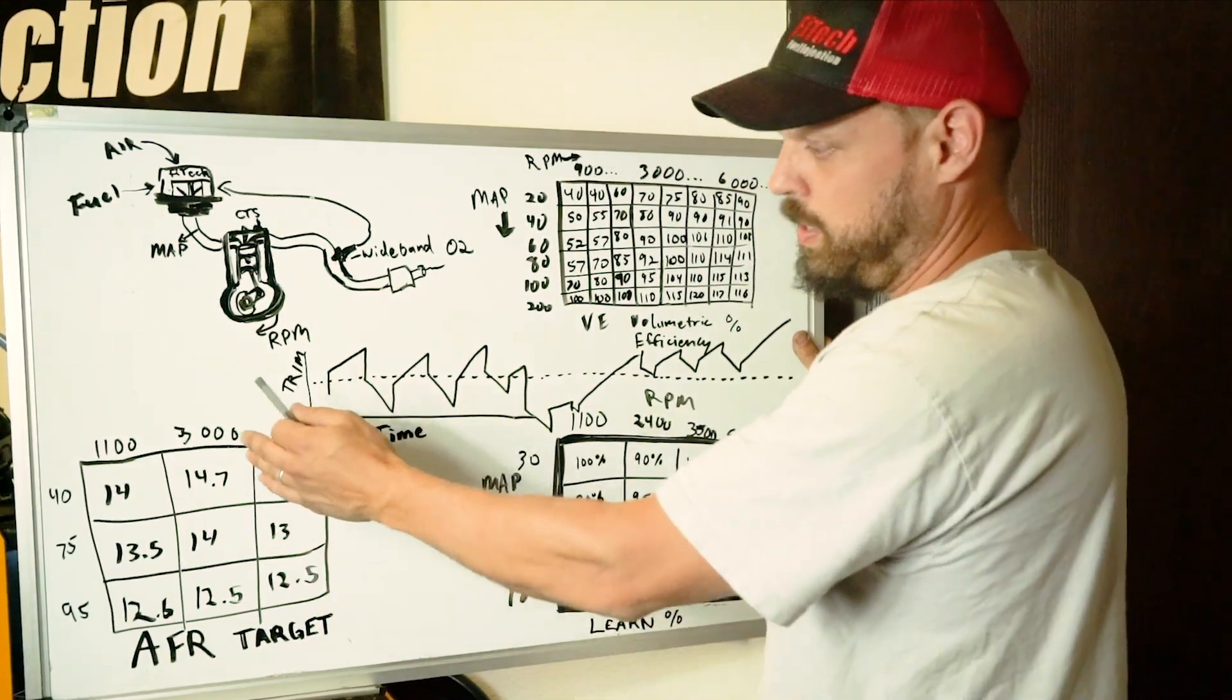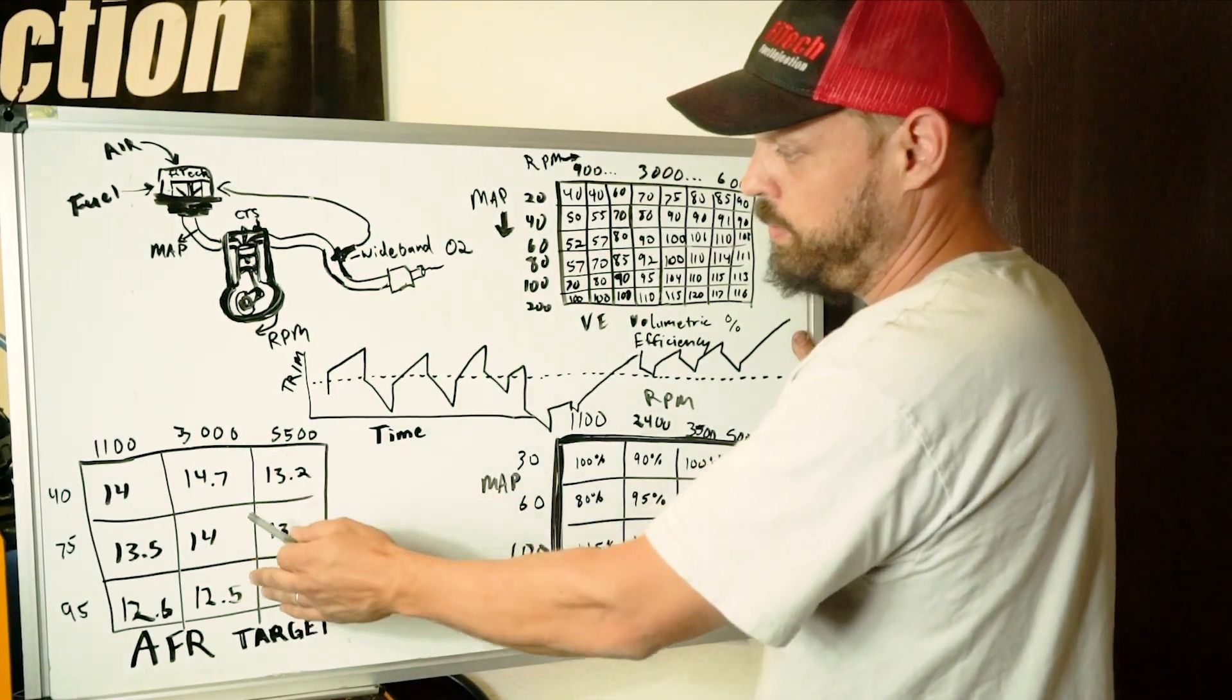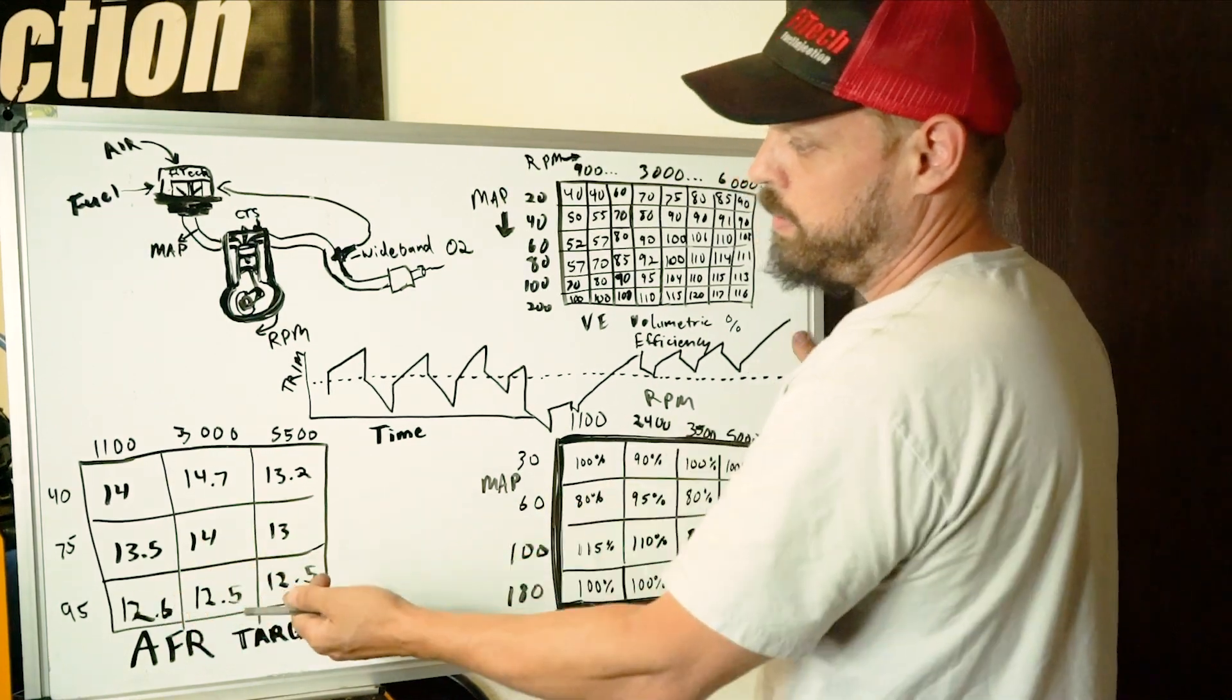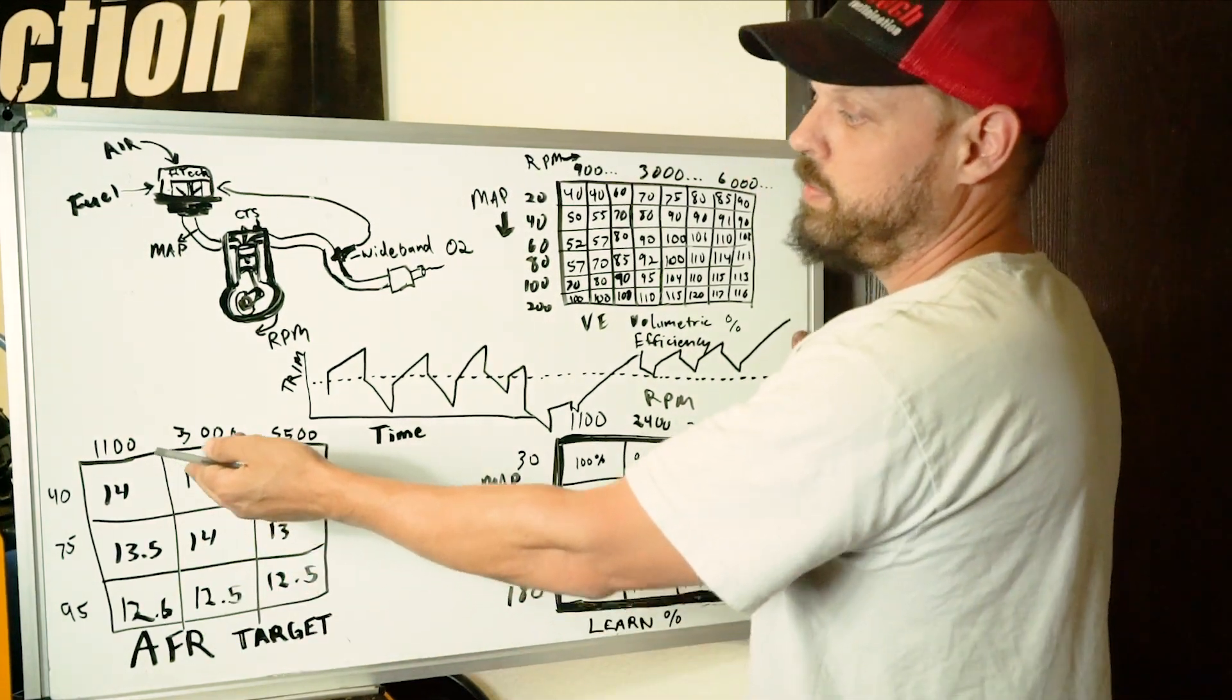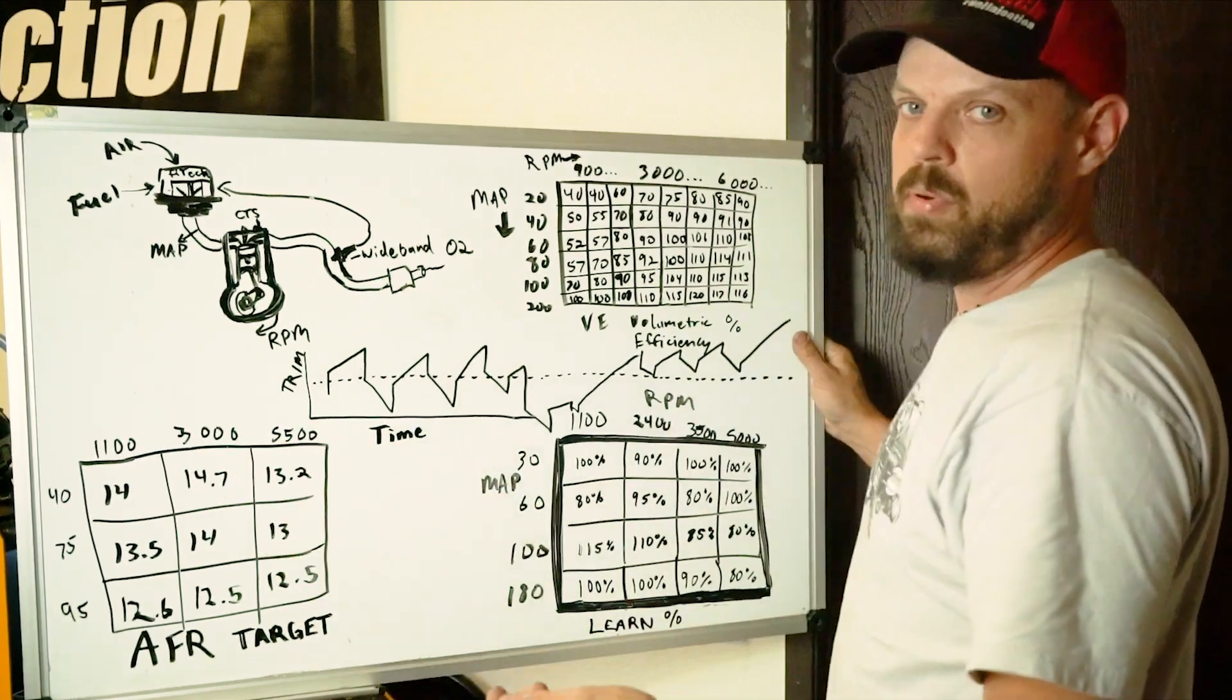The target does change based on RPM and load. Say at full throttle, I may be in 12 and a half. And cruise, I may be 14.7. At idle, maybe 13.6.